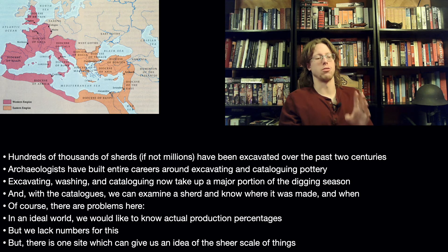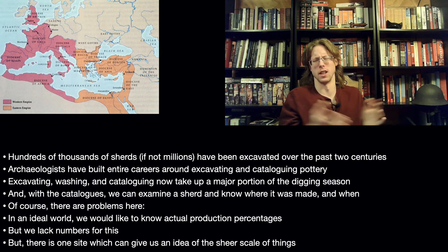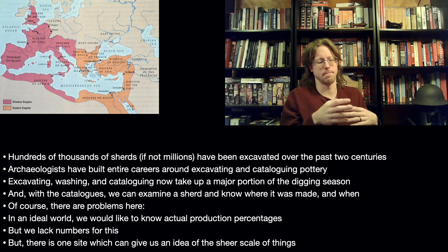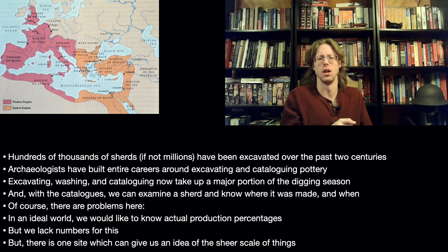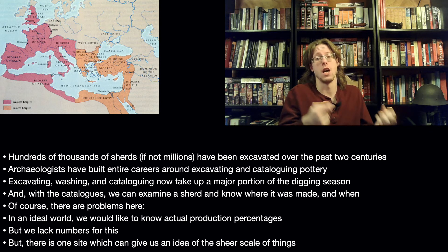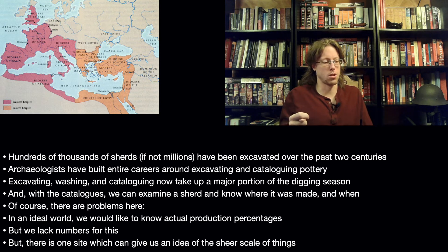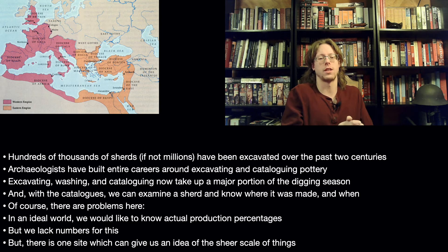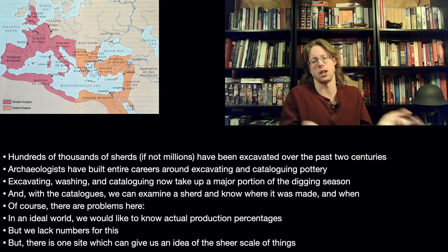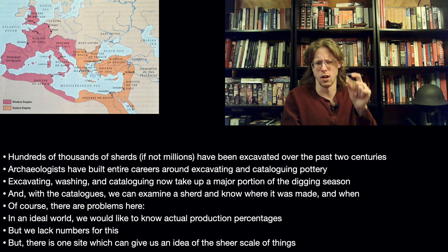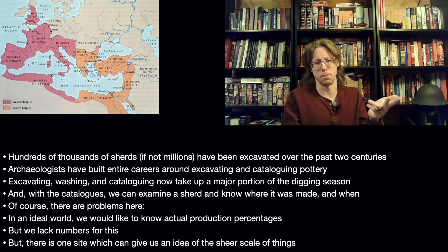As far as the material evidence is concerned, we have hundreds of thousands, if not millions, of shards. We have a crapload of pottery data, which has been excavated over the past two centuries. Archaeologists have built entire careers around excavating and cataloging that pottery. Excavating, washing, cleaning, and cataloging now take up a major portion of the digging season. There are some archaeologists who are able to look at a tiny piece of a shard and tell you where it was made, when, and how it was possible to get that shard to wherever it is in the Roman Empire you're looking.